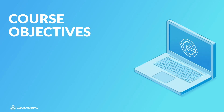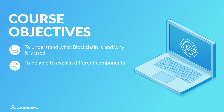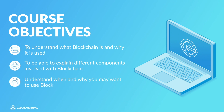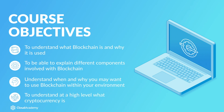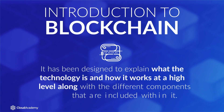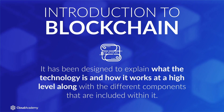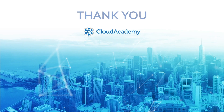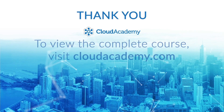The objectives of this course are as follows: to understand what blockchain is and why it is used, to be able to explain the different components involved with blockchain, understand when and why you may want to use blockchain within your environment, and to understand at a high level what cryptocurrency is. It has been designed to explain what the technology is and how it works at a high level along with the different components of blockchain. Now we have a clear understanding of what is required, let's get started with the training.